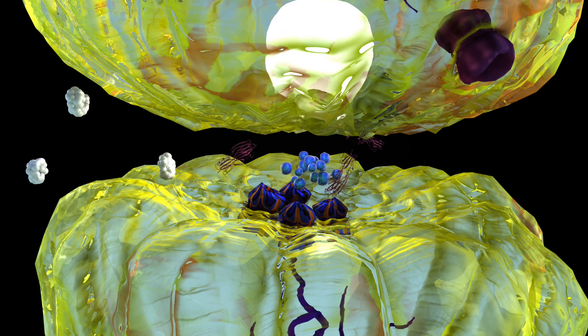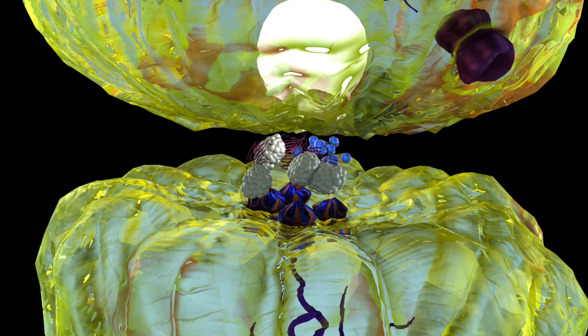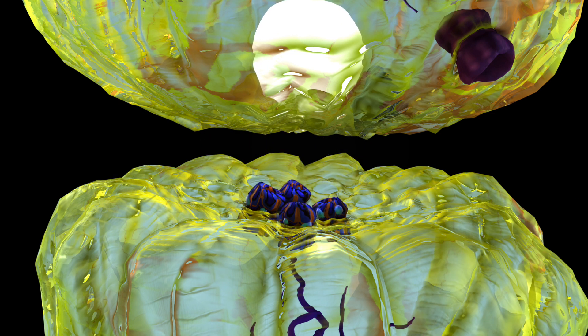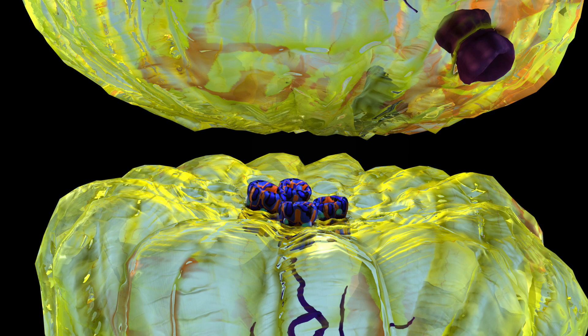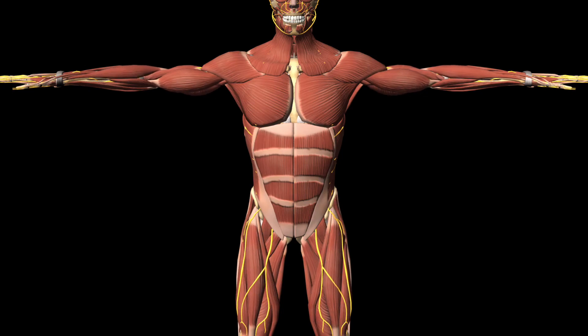MAO inhibitors will bind to MAO and stop it from breaking down dopamine. With more dopamine available to bind to the receptor, the electrical signal transmits and muscle movement is stabilized.